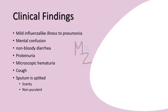Clinical findings: The clinical picture can vary from a mild influenza-like illness to severe pneumonia, accompanied by mental confusion, non-bloody (watery) diarrhea, proteinuria (protein present in urine), and microscopic hematuria (blood found in urine on microscopic examination). Cough is a prominent symptom and sputum is also produced, which is scanty and non-purulent.